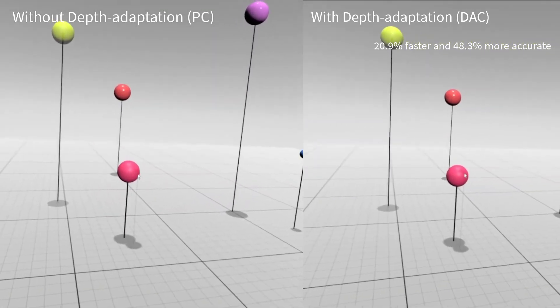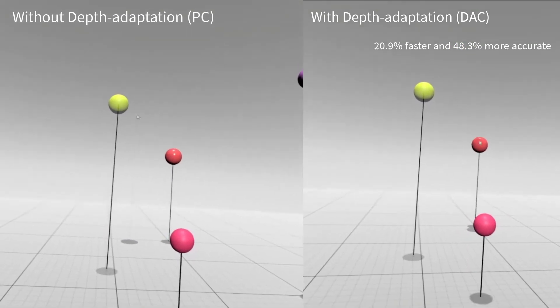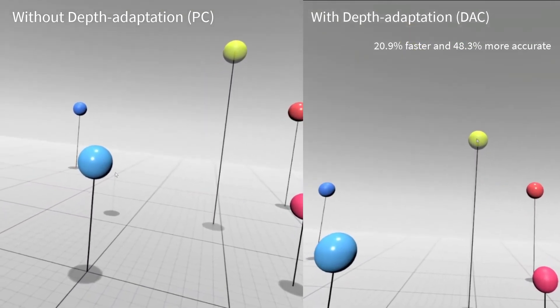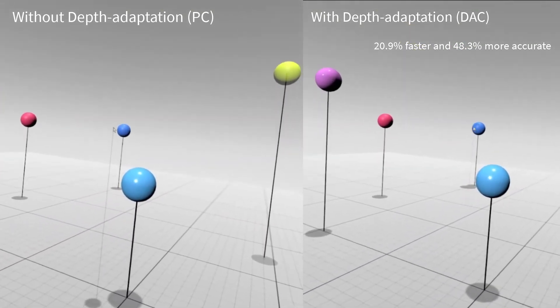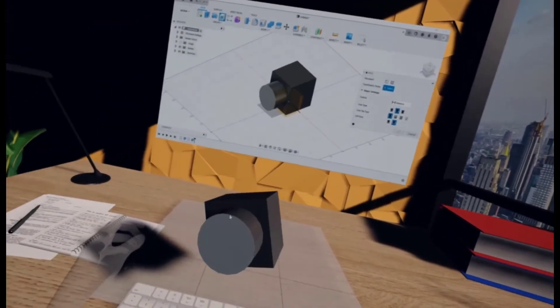We found Depth Adaptive Cursor can achieve a significant reduction in error, workload, and time spent in 3D object selection, which can be important for applications that require precise 3D selection.